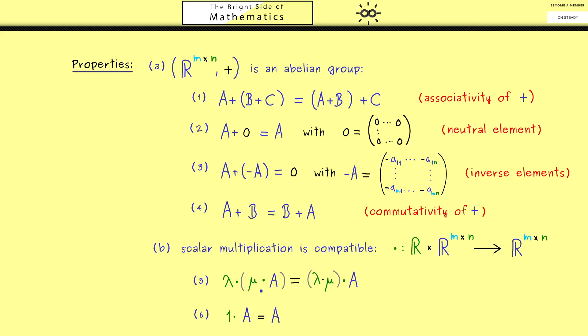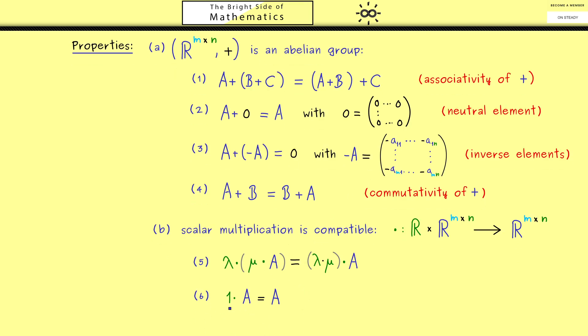So this is also something we can immediately check. So here it does not matter if we first multiply two scalars and then use the scalar multiplication or do it in a row. And the other one is of course also easy to see.